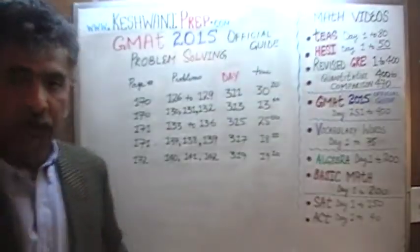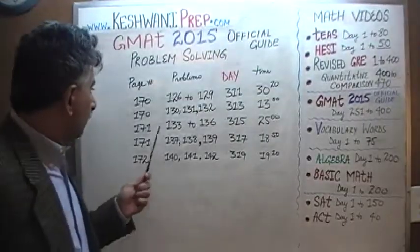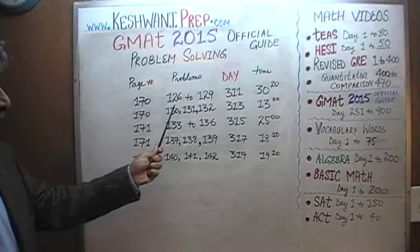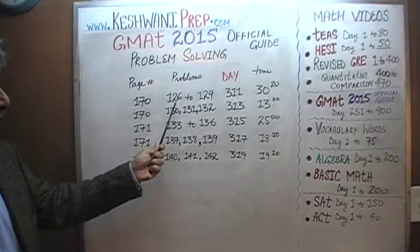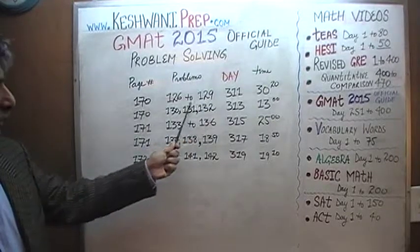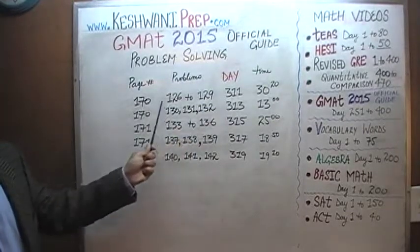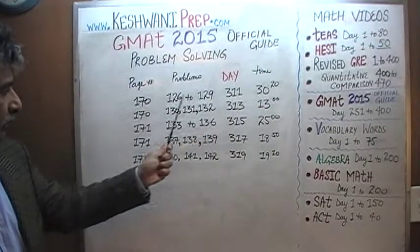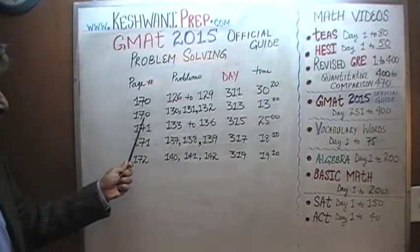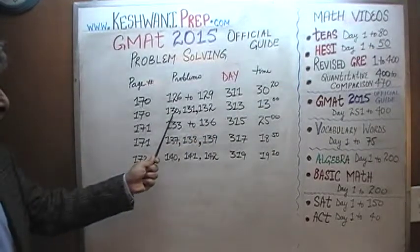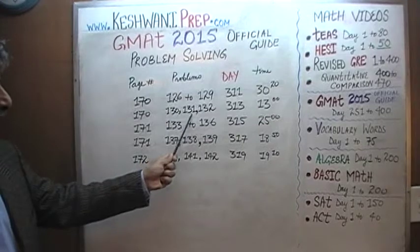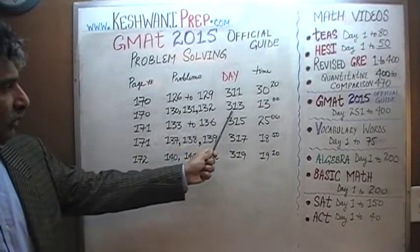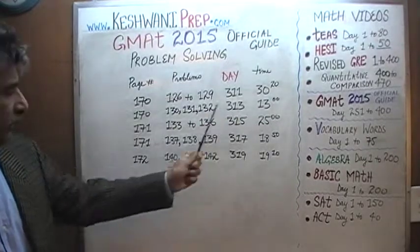We will begin our story with page number 170. On page 170 you will find problems 126 through 129 — solutions to all four of those problems were presented on day number 311. On the same page 170, problems 130, 131, and 132 were solved on day number 313.